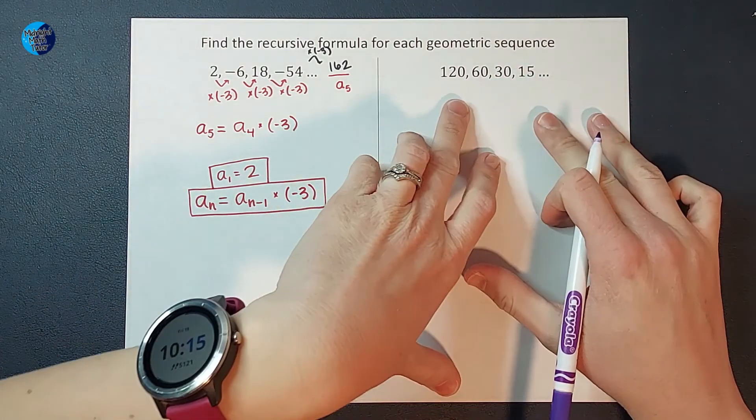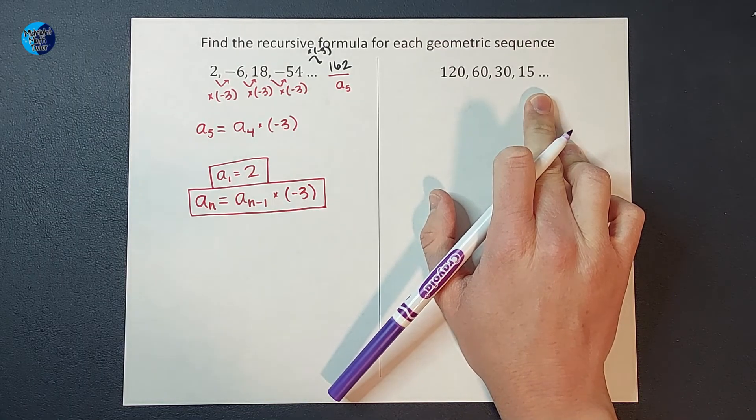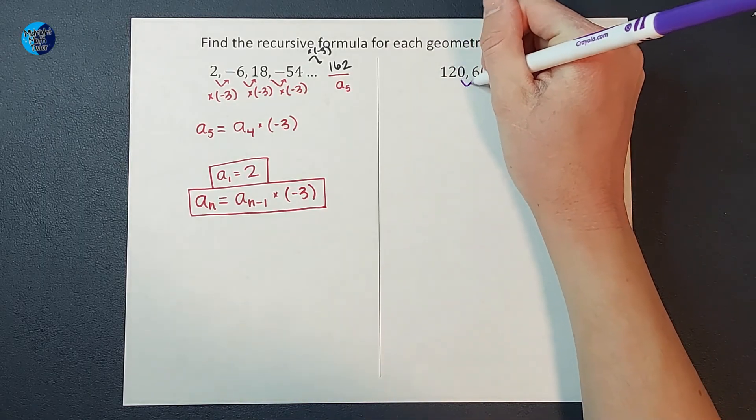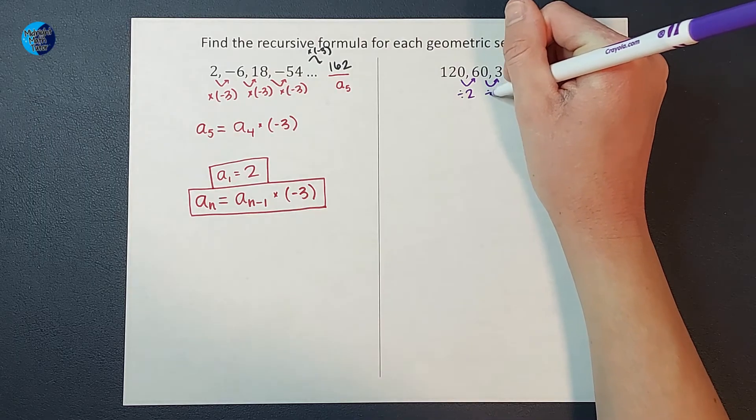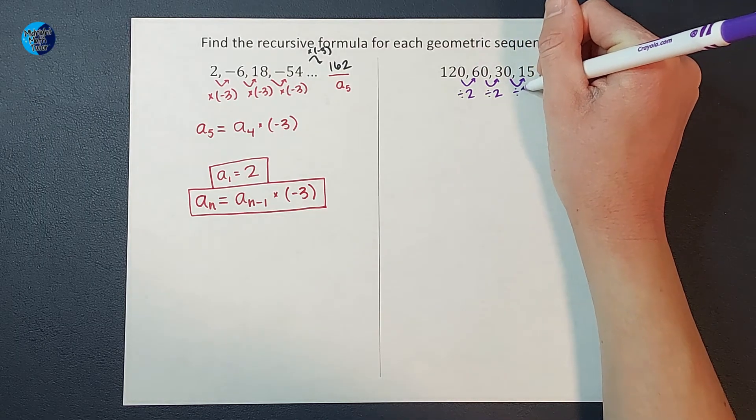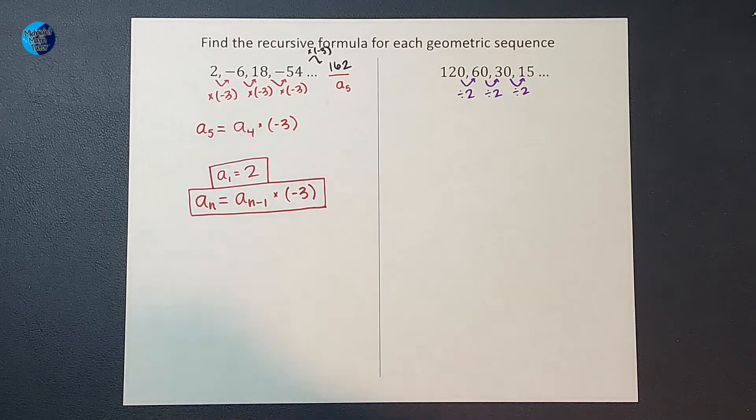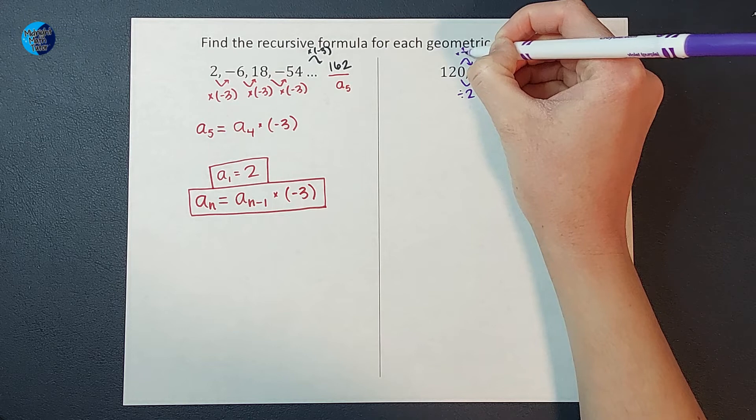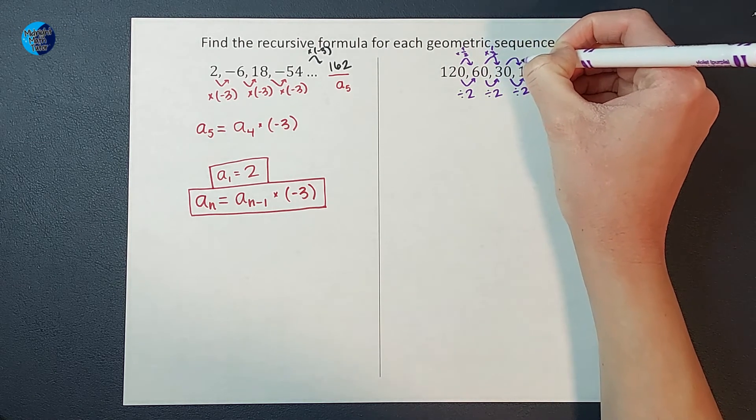All right, let's look at this one now. This one we're going down obviously, but we're not subtracting, we are dividing. So if you look at this, we are dividing by two each time. Now oftentimes when we are looking at sequences, instead of saying divide, sometimes we like to say we're multiplying by a fraction, which is really the same thing. So I could also say that we're multiplying by one half each time. That would be the same thing, just a different way of saying it.